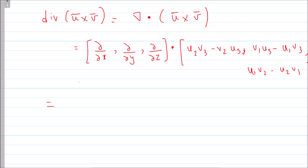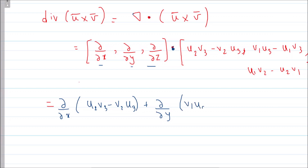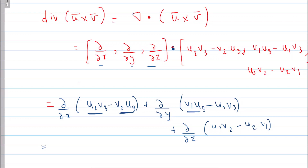Now I find the divergence of u×v, which is the dot product of the nabla operator (∂/∂x, ∂/∂y, ∂/∂z) with the cross product vector. This gives: ∂/∂x(u2·v3 − v2·u3) + ∂/∂y(v1·u3 − u1·v3) + ∂/∂z(u1·v2 − v1·u2). We then split each term and apply the product rule to each partial derivative.